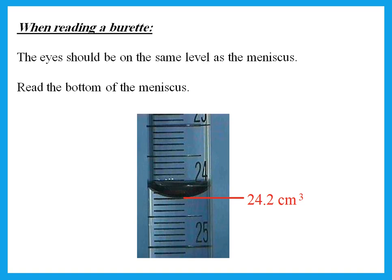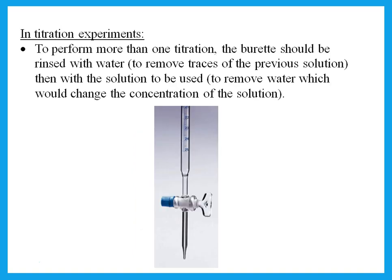For example, a reading might be 24.2. In any titration experiment, to perform more than one titration, the burette should first be rinsed with water to remove traces of the previous solution, then rinsed again with the solution to be used in order to remove the water — because water left in the burette would change the concentration of the solution.